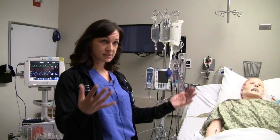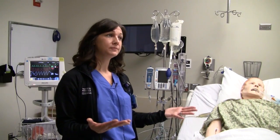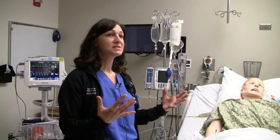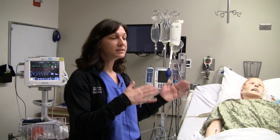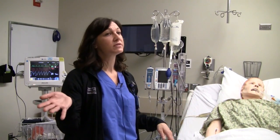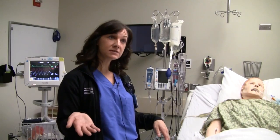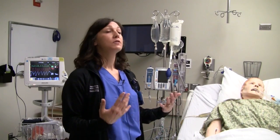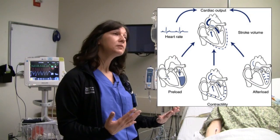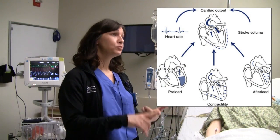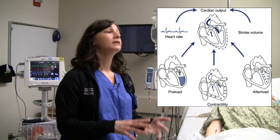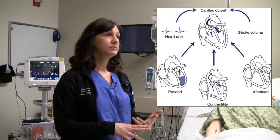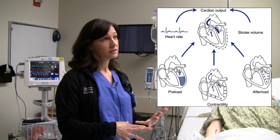Another component of cardiac output is stroke volume. Stroke volume is the actual blood that is ejected out with every single beat, and that is affected by a large amount of variables — those primarily being preload, afterload, and contractility.